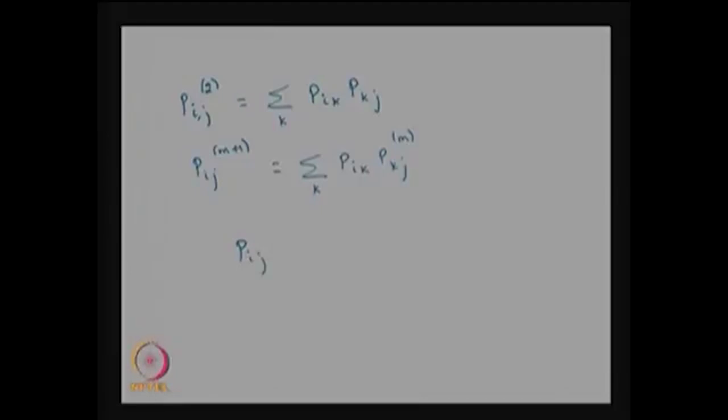In general, the probability of the system moving from state i to state j in n+m steps equals the sum over all possible k of the probability of moving from i to k in m steps times the probability of moving from k to j in n steps. This equation is known as the Chapman-Kolmogorov equation for the time-homogenous discrete time Markov chain.